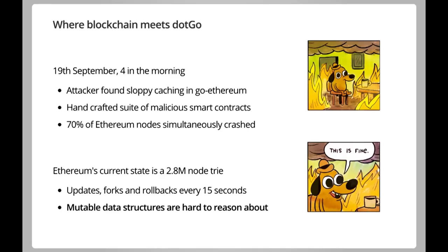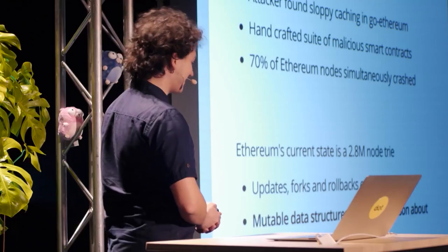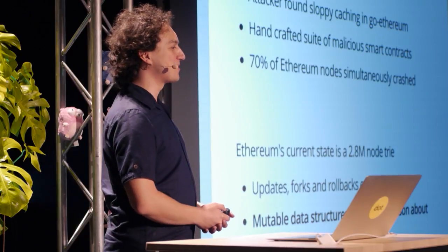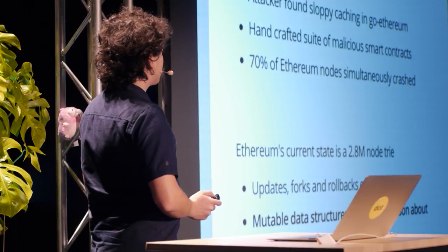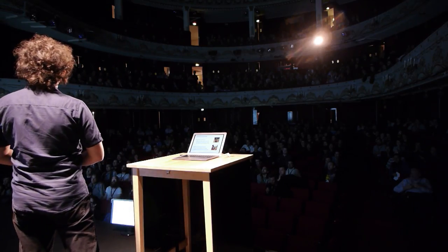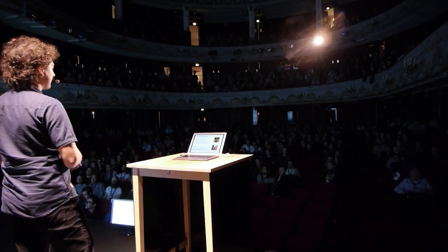So where does DotGo come into the picture? About three weeks ago, we had our yearly developer conference. It started on the 19th of September at 9 o'clock in the morning, and at 4 o'clock in the morning, 70% of our network dropped offline all at the same time. It turned out that somebody found a bug in our caching mechanisms and decided to crash the entire network right before our conference. We did manage to fix it fairly quickly, but for the last three weeks we've been constantly battling these attacks.